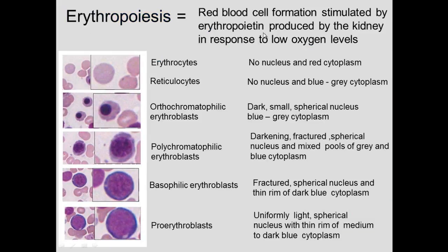Erythropoiesis — red blood cell formation — is stimulated by erythropoietin, a protein produced in the kidney in response to low oxygen tension. Low oxygen tension induces erythropoietin, which causes the bone marrow to produce more red blood cells. The mature erythrocyte has no nucleus. The reticulocyte also has no nucleus but has a slight blue cytoplasm tint. The orthochromatic erythroblast has the same cytoplasm but retains a nucleus. The nucleus starts large and gets smaller with development through the polychromatic erythroblast stage, which shows blue and pink cytoplasm, to the basophilic erythroblast with blue cytoplasm and a spherical nucleus.